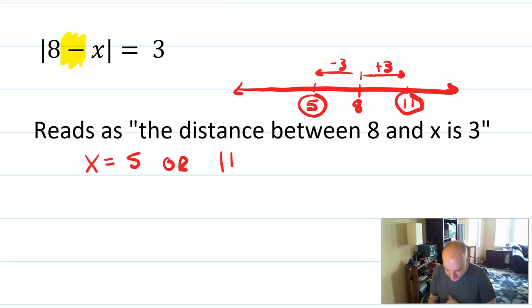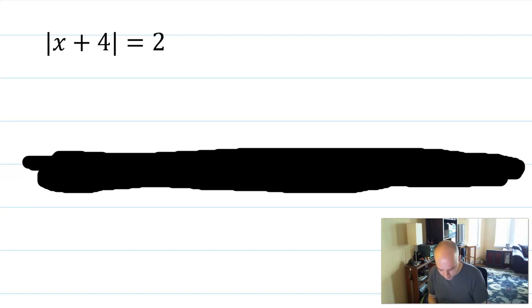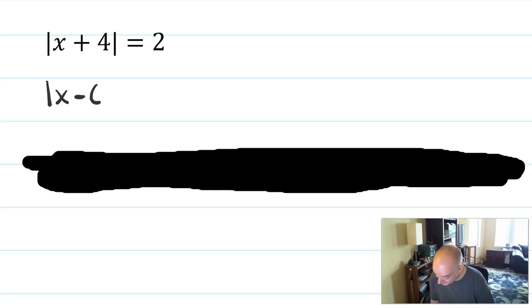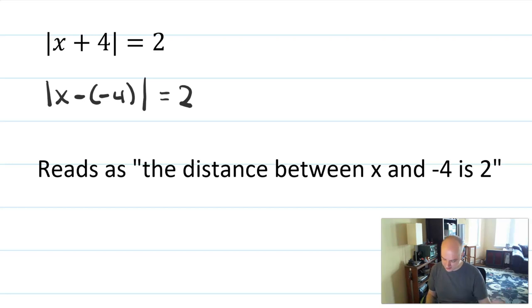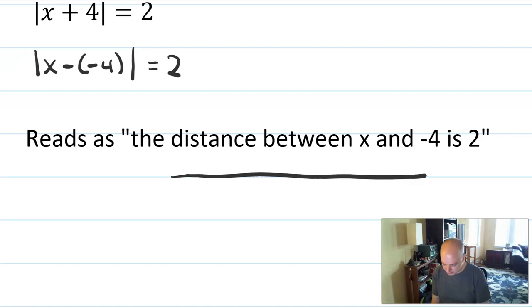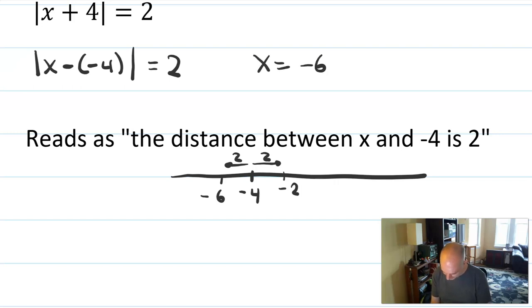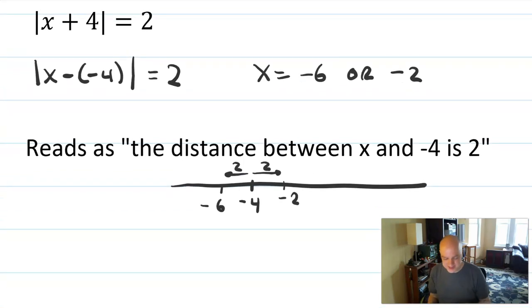That always works, even when you don't think you can see a subtraction sign. Last example: absolute value of x plus 4 equals 2. You might say that's only true with subtraction — but we can always find subtraction. This is the same as the absolute value of x minus negative 4 equals 2. Written that way, the sentence is: the distance between x and negative 4 is 2. On a number line, here's negative 4 — two units one way gives negative 2, and two units the other way gives negative 6. So x equals negative 6 or negative 2. Solved without any algebraic procedure — that's the power of thinking about absolute value as a distance.